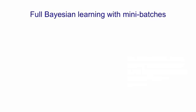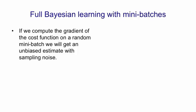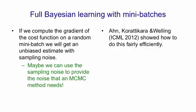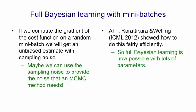Full Bayesian learning can actually be done with mini-batches. When we compute the gradient of the cost function on a random mini-batch, we get an unbiased estimate but with sampling noise. The idea is to use that sampling noise to provide the noise that a Markov chain Monte Carlo method needs — it's a very clever idea. Recently, Welling and his collaborators made it work nicely so they could fairly efficiently get samples from the posterior distribution over weights using mini-batch methods. This should make it possible to use full Bayesian learning for much larger networks where you have to train with mini-batches to have any hope of ever finishing training.